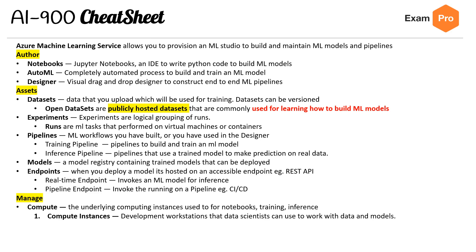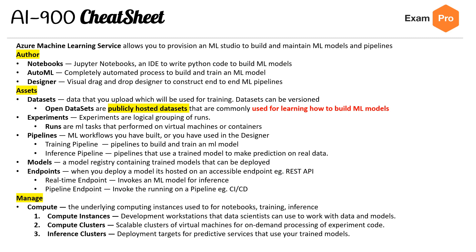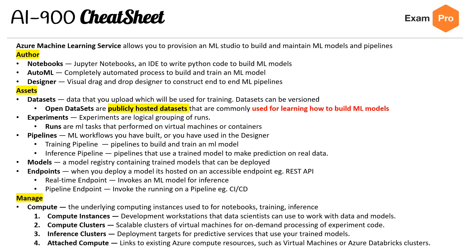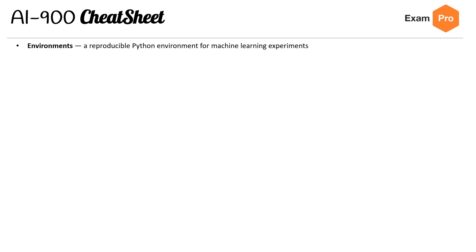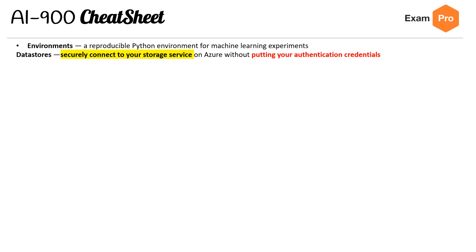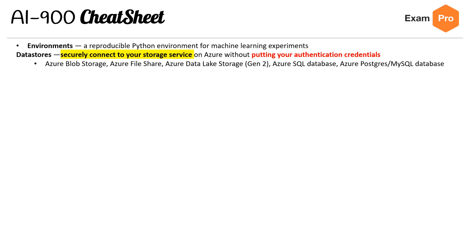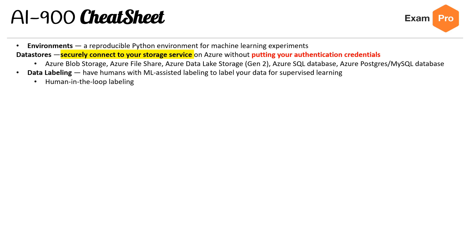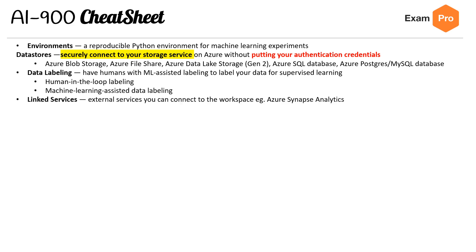Under Manage we have Compute — the underlying computing instances used for notebooks, training, and inference. Compute Instances are development workstations that data scientists use; Compute Clusters are scalable clusters of virtual machines for on-demand processing of experimental code such as training and preprocessing; Inference Clusters are deployment targets for predictive services. Attached Compute links to existing Azure compute resources such as virtual machines and Azure Databricks clusters. Environments provide a reproducible Python environment for machine learning experiments. Datastores securely connect to your storage service on Azure — including Blob Storage, File Share, Data Lake Storage Gen2, Azure SQL Database, Azure PostgreSQL, and MySQL. Data Labeling supports human and ML-assisted labeling of data for supervised learning. Linked Services allow external services to connect to the workspace, such as Azure Synapse Analytics.